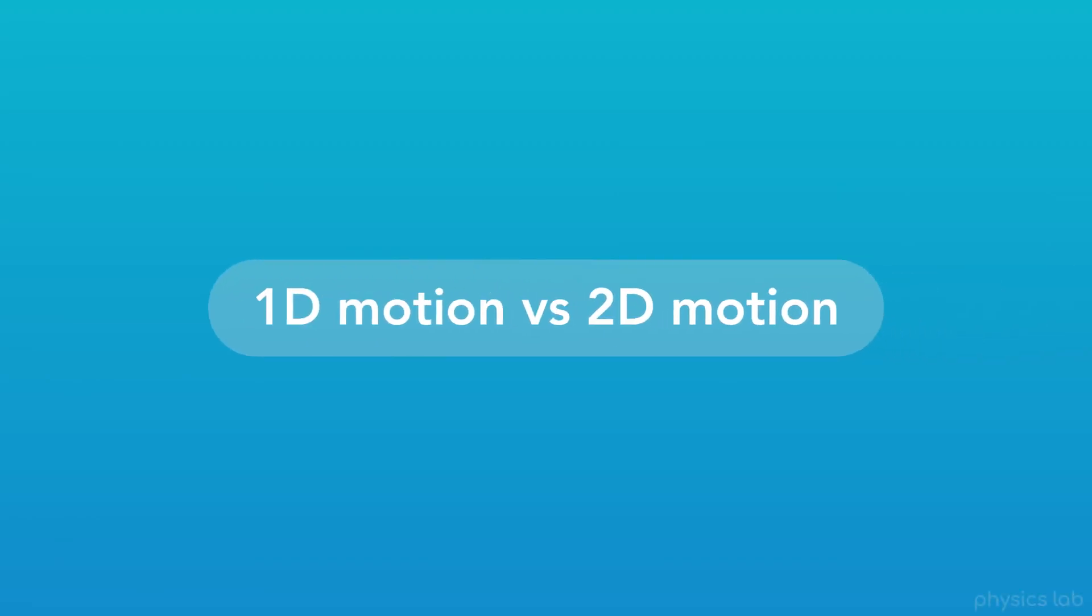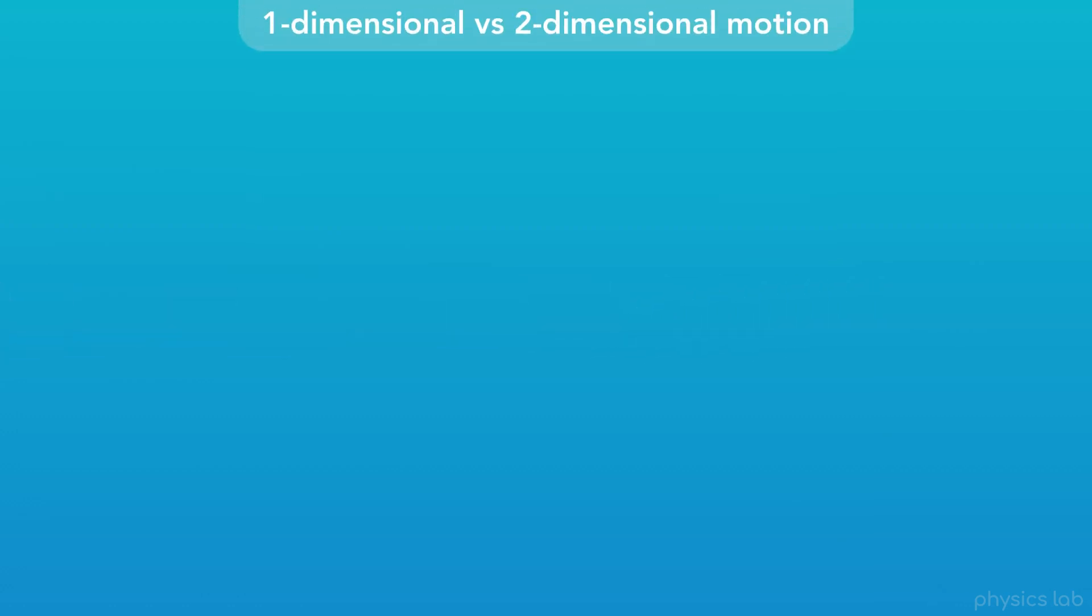So, what's the difference between one-dimensional and two-dimensional motion? We already learned about one-dimensional, or 1D motion, also known as linear motion.